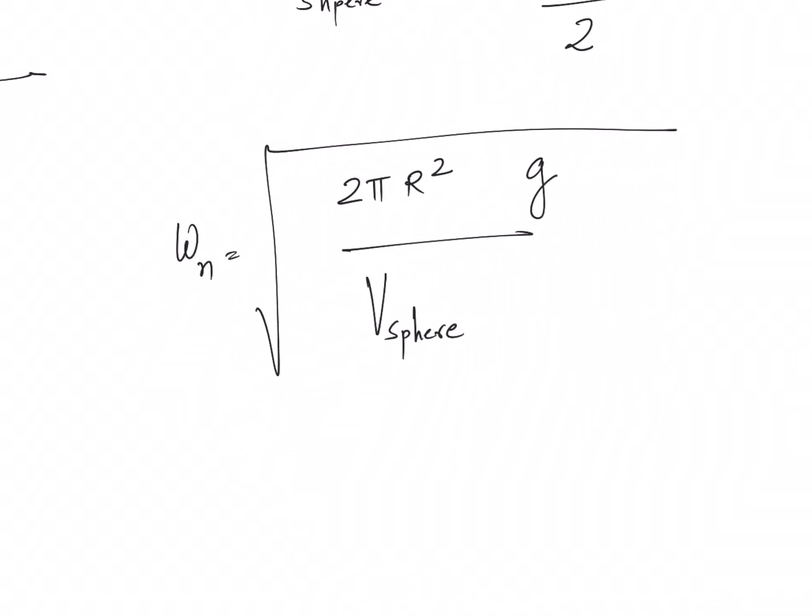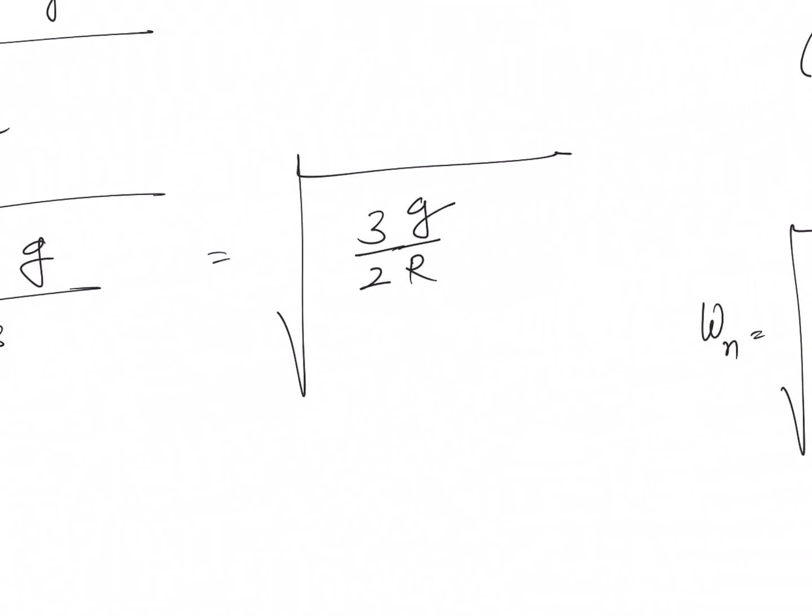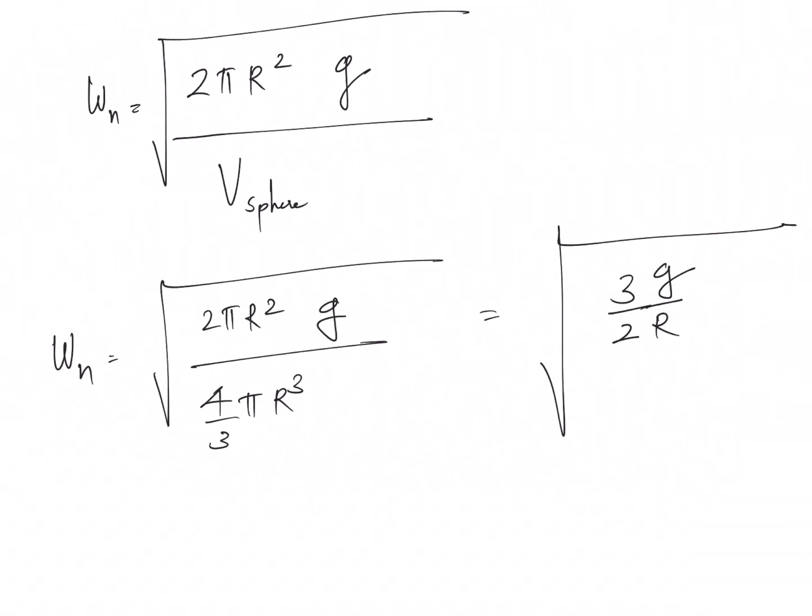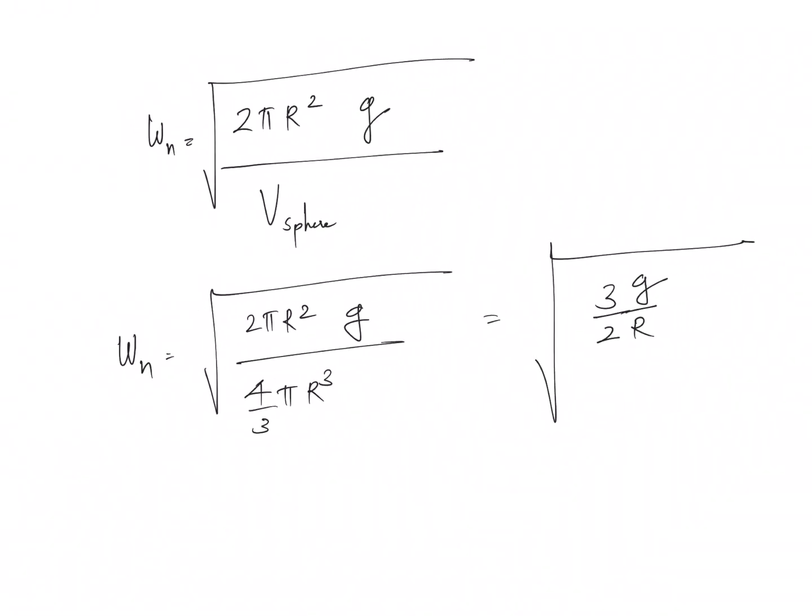If I assume the sphere to be a solid one, then I can rewrite the expression for volume of sphere as 4 by 3 π R³. High school math, that's it. Plug and check, I end up with this expression where everything is known to me now. Once I plug in all the values, my ωₙ will be 8.6 radians per second. This is the answer which we are looking at.